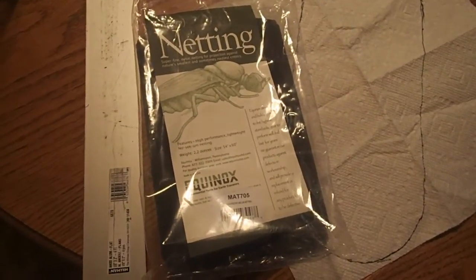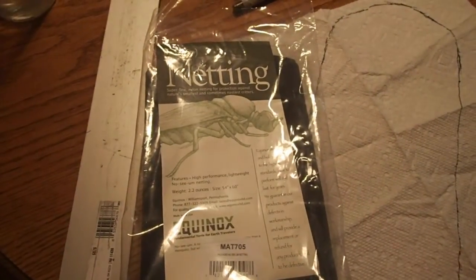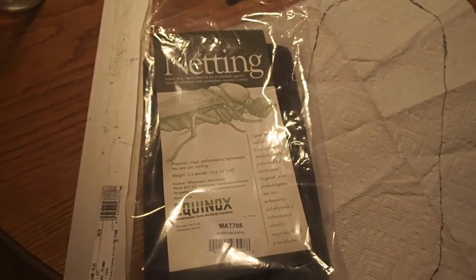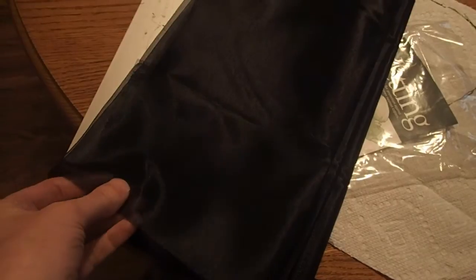So the netting that we got is this Equinox no-see-um netting. It is 54 by 60 inches, and we got it on Amazon. And if you open it up, it's one big sheet. But as you can see, it is really fine netting. And we are going to use this in not only the port lights, but also in the companion way and in the forward hatch over the v-berth so that we can get air flow throughout the boat, but also keep these little bugs out.